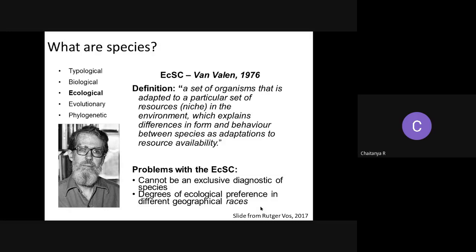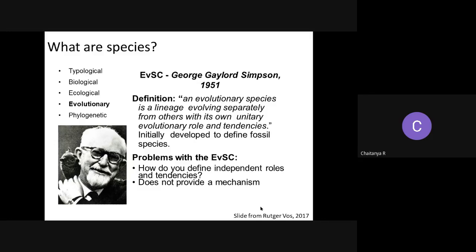Moving on, we have the evolutionary species concept by George Simpson — he looks a lot like the founder of KFC but he's not. Simpson propounded the evolutionary species concept, which says species are lineages evolving separately from others with their own unitary evolutionary roles and tendencies. The problem is he doesn't provide a mechanism to test what he's saying. However, to his credit, he's the first to actually consider species as a lineage, which is what we all believe today.